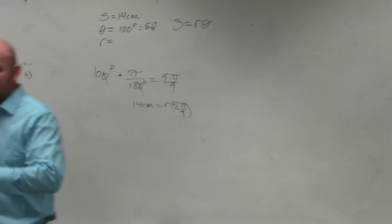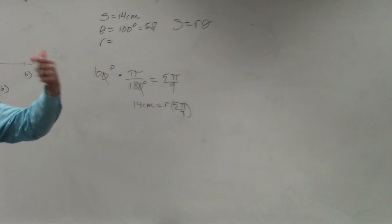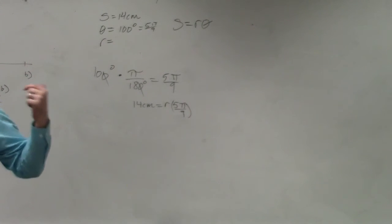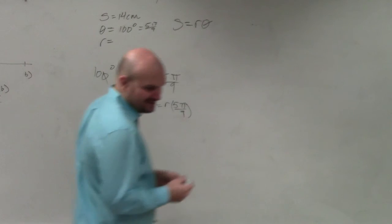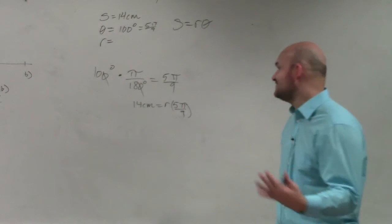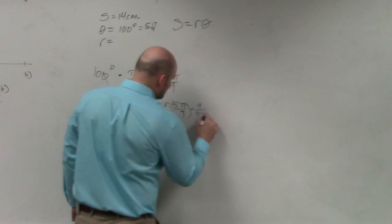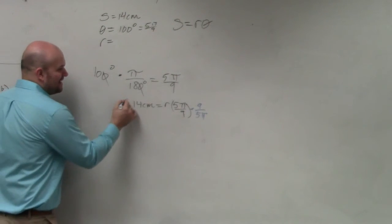How do I get r by itself? When r is being multiplied by a fraction, to undo multiply by a fraction, I simply just need to multiply by the reciprocal. I think that might be the only thing my students will ever remember from me teaching. 9 times 5 pi.